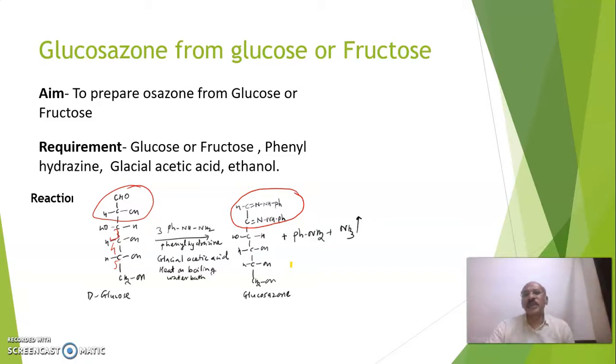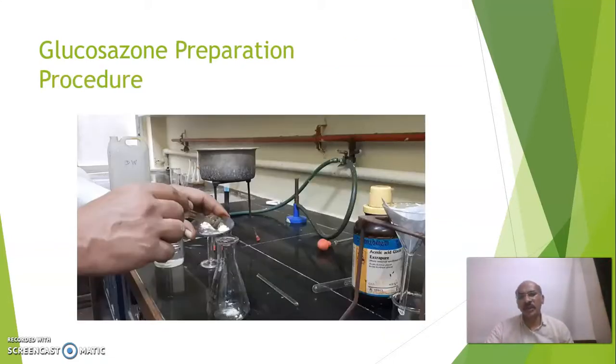What are chemicals required? Glucose or fructose - now for this experiment we will use glucose. Phenylhydrazine, glacial acetic acid as a solvent, and solvent for crystallization is ethanol. See how to perform it in a laboratory.